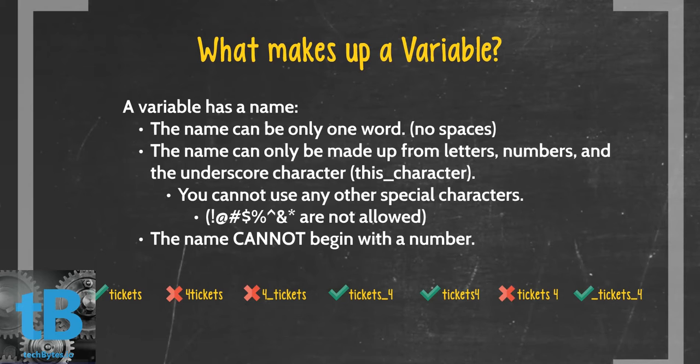As you can see below, here we have tickets, which the green check marks represent that it's good, and four tickets. See it starts with a number. As we can see in the last line of this definition, it cannot begin with a number, so that is bad. And then we have four underscore tickets. Those are all representations of good and bad variable names.